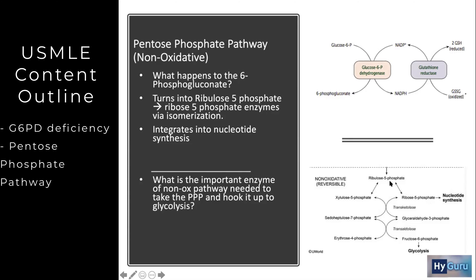The most important enzyme in the non-oxidative pathway is transketolase, which needs vitamin B1. This integrates with the fact that patients with wet beriberi or alcoholism will have issues making nucleotide precursors, leading to abnormalities in their RBCs — that's why alcoholism is related to macrocytic anemia. Messed-up nucleotide precursors in neurons is also why you can get a Korsakoff-like syndrome. It all integrates into this pathophysiology.